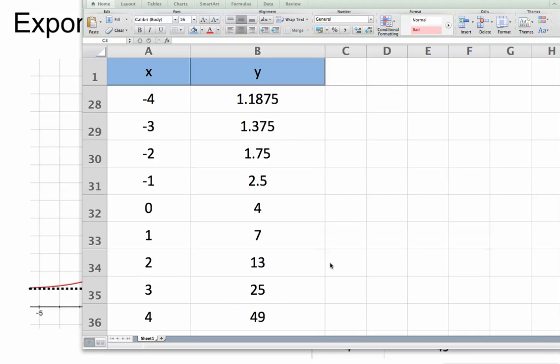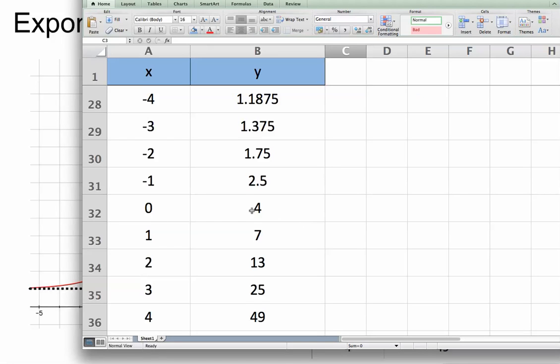It would be useful to see a table of values. We can get our calculators to generate this. I've done this in Excel to help us see quickly what happens. Going through the x values starting with 0, 1, 2, 3, we get 49 for x equals 4.